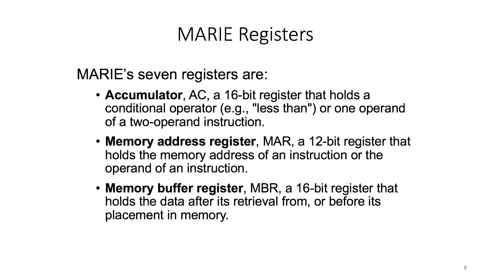The MARIE architecture has 7 registers. The first one is the accumulator, shortened to AC. The accumulator is a 16-bit register that holds a conditional operation — for example, one of the operands in an instruction. For example, in an addition operation we have 2 operands, and one of the operands is loaded into the AC for the operation.